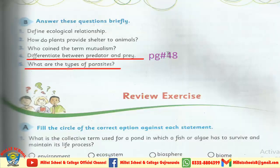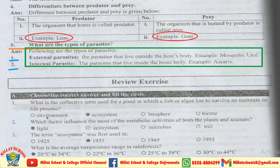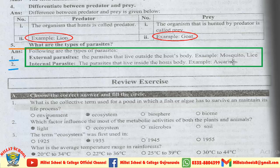Okay students, question number 5 کے لیے دیکھیے: What are the types of parasites? اس کا answer note کریں — Following are the types of parasites. First: external parasites — the parasites that live outside the host's body, example mosquito and lice. Second: internal parasites — the parasites that live inside the host's body, example Ascaris. Question number 4 and 5 آپ نے اچھے سے learn کرنا ہے۔